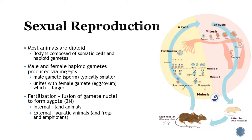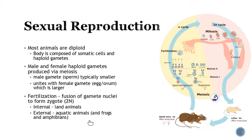A haploid cell only has one copy, and we form haploid cells via meiosis — this is how we form sperm and eggs, our gametes. The way we reproduce our diploid cells is through mitosis. Fertilization, in sexual reproduction, is when two haploid cells fuse together to make a diploid zygote. Land animals will probably use internal fertilization, versus external fertilization for those found in aquatic environments.